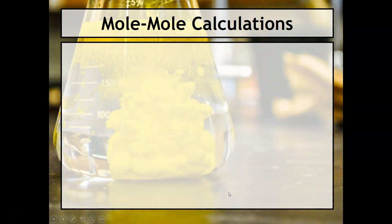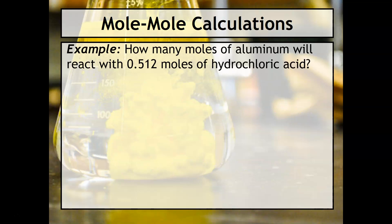Let's try the next one. This one says, how many moles of aluminum will react with 0.512 moles of hydrochloric acid? Again, like usual, I don't give you the big equation and you absolutely need the balanced chemical equation when you're doing this. So we'll start out with our aluminum reacting with hydrochloric acid.